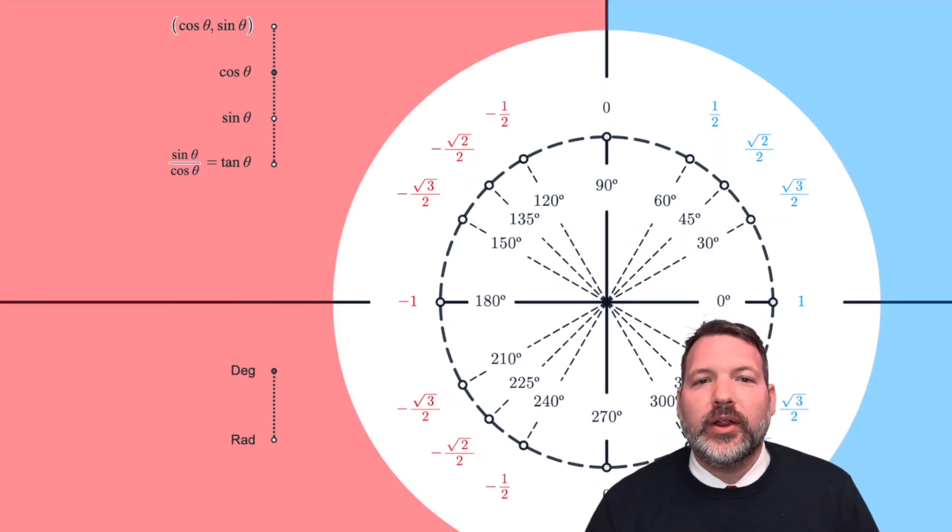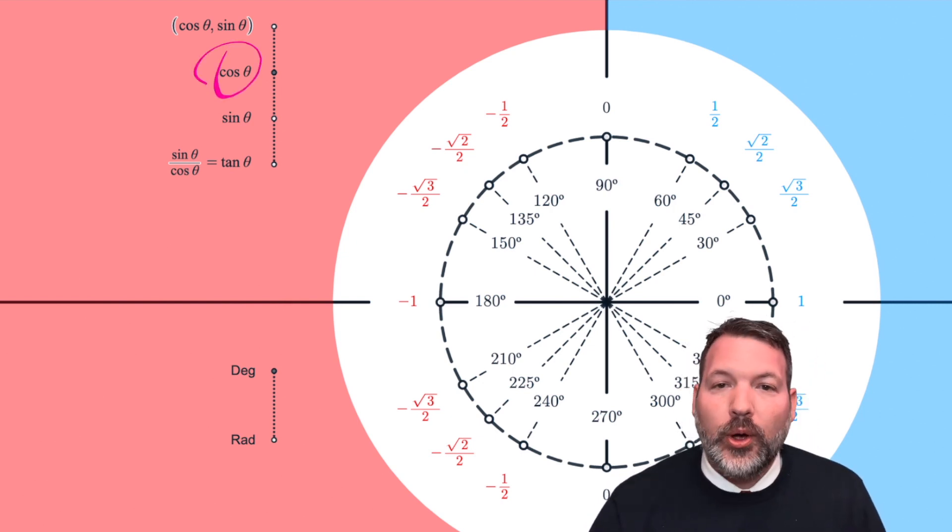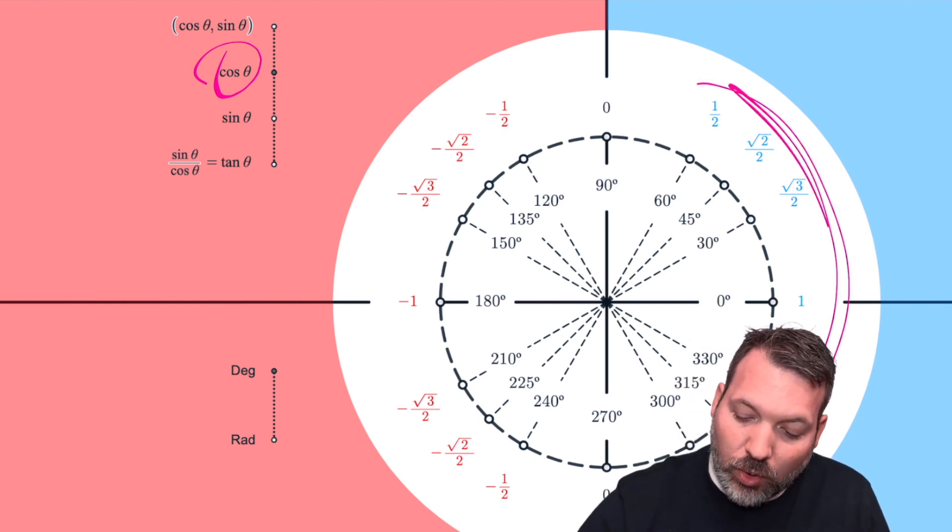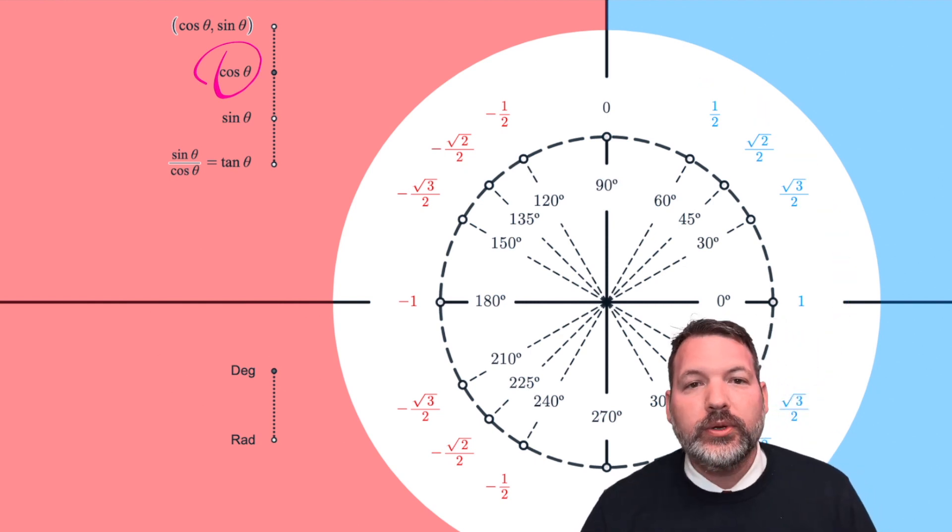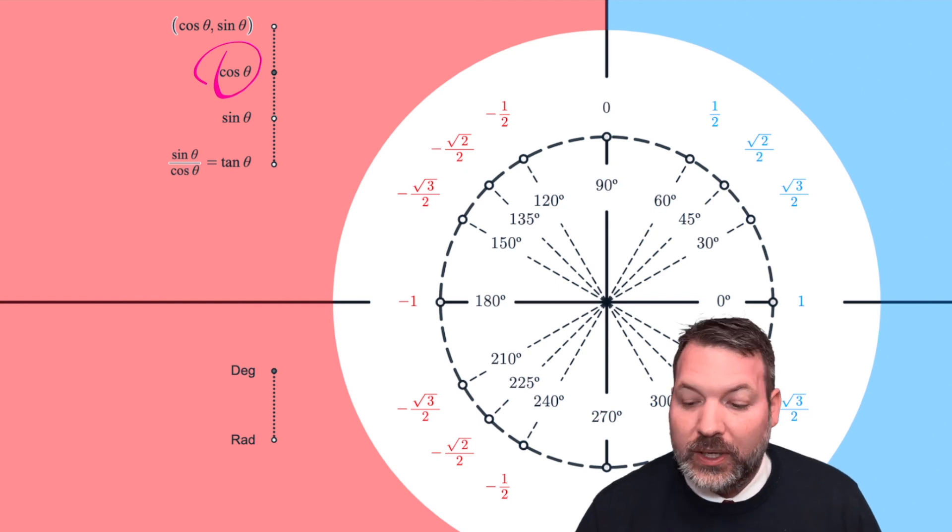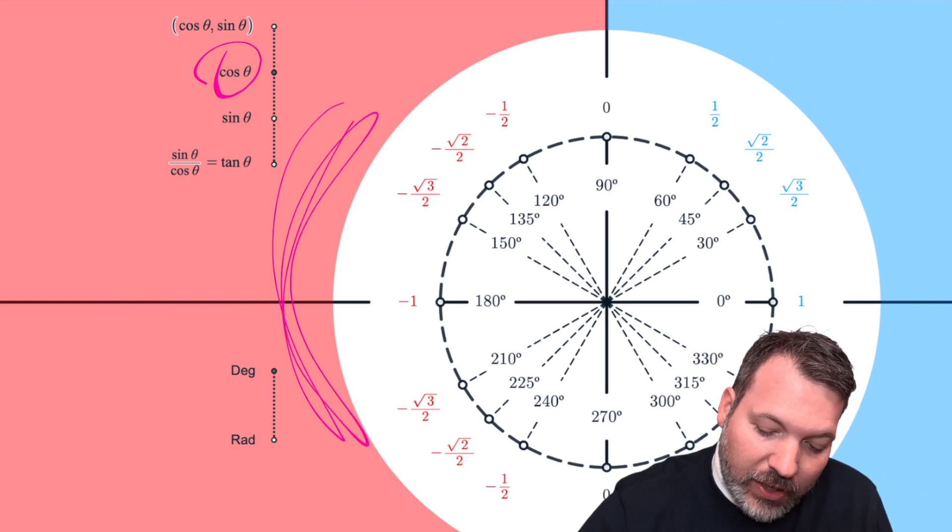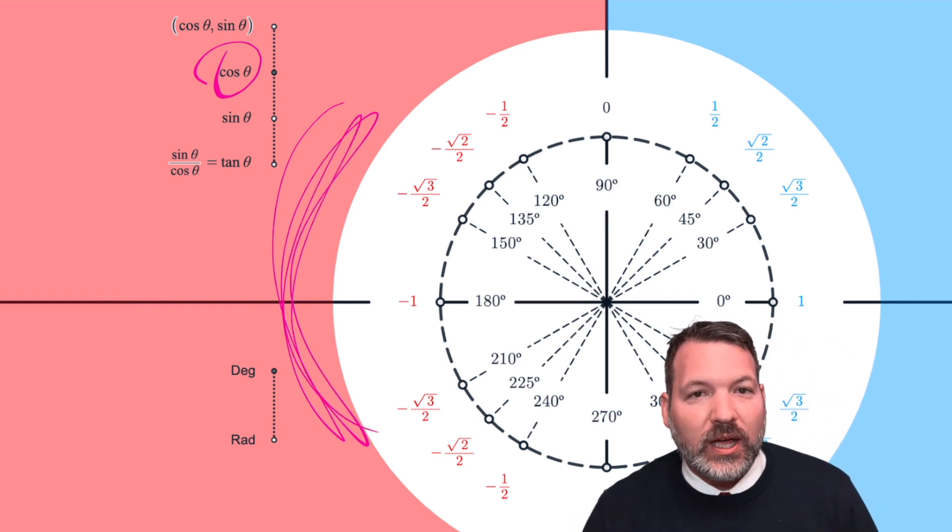Because we're in the coordinate plane, we now have an understanding of why the trigonometric functions can sometimes take on negative values. If I'm looking, for example, at cosine, which again is the x-coordinate, and I'm looking at any of the angles in quadrants 1 and 2, that cosine value is going to be positive, because all the x-values to the right of the origin are positive. But if I'm looking at the cosine of any of the angles on the left side of the coordinate plane in quadrants 2 or 3, those values are going to be negative.